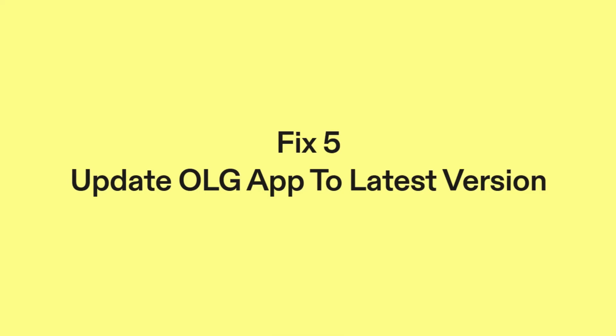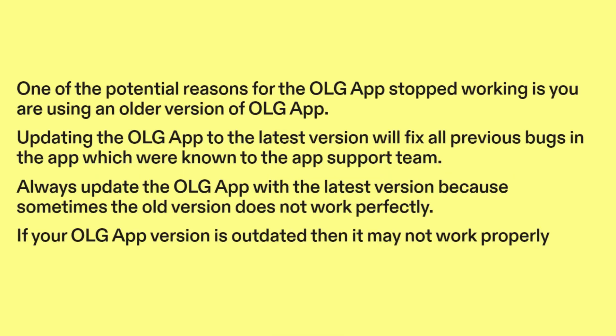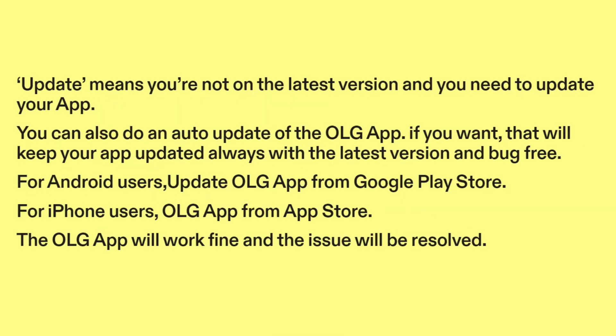Fix five: update OLG app to the latest version. One of the potential reasons for the OLG app stopped working is you are using an older version. Updating to the latest version will fix all previous known bugs. Always keep the OLG app updated because sometimes the old version does not work perfectly. You can also enable auto-update to keep your app updated and bug-free. For Android users, update the OLG app from the Google Play Store. For iPhone users, update the OLG app from the App Store.